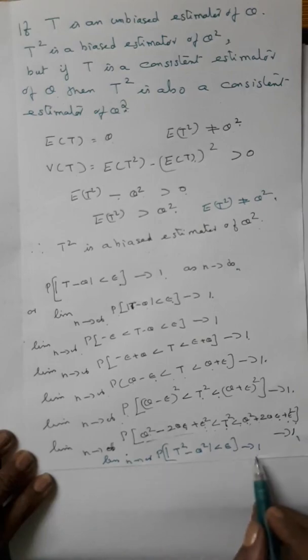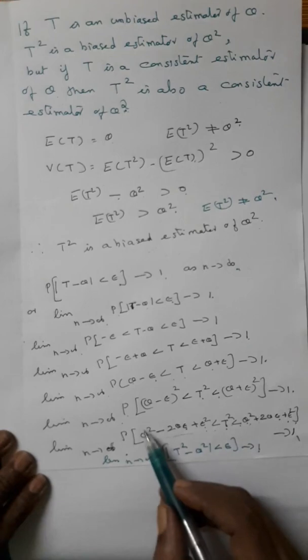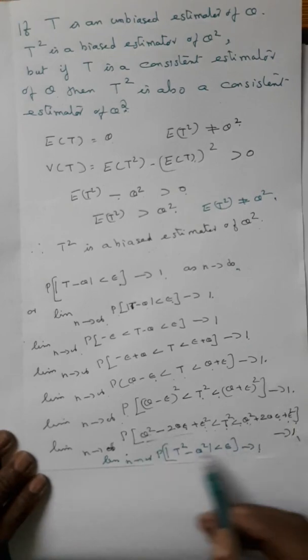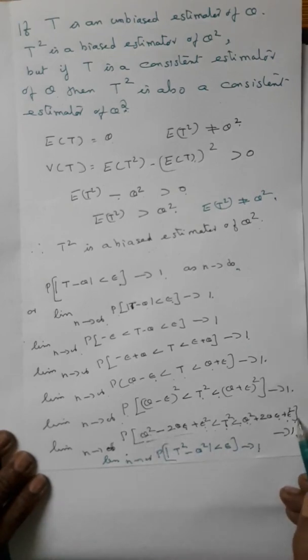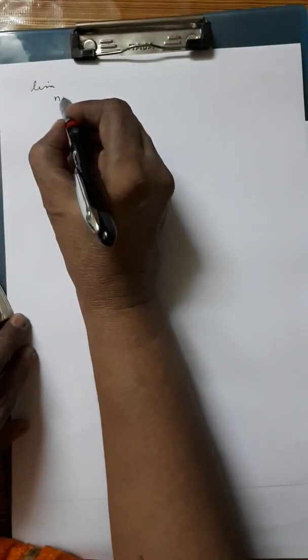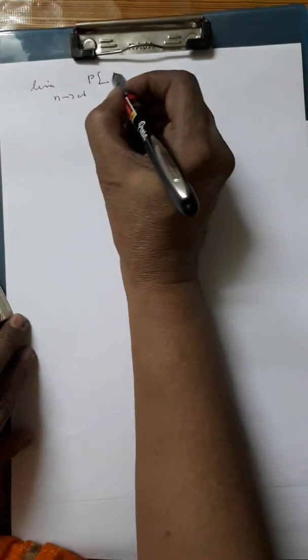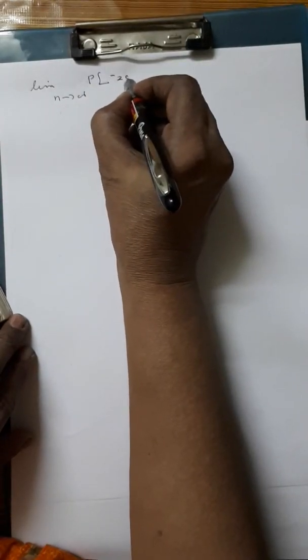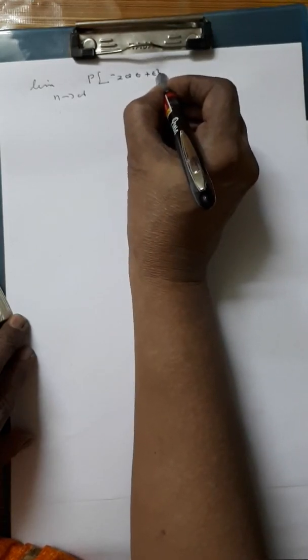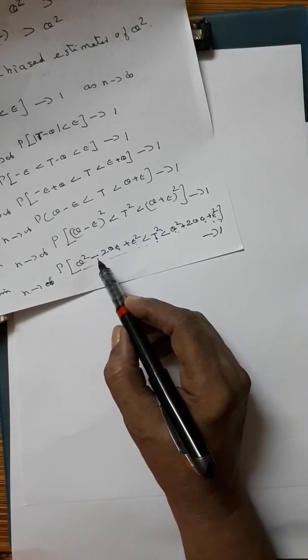For proving this, we are going to subtract theta squared within the bracket. So we get limit n tends to infinity of P of minus 2 theta epsilon plus epsilon squared less than T squared minus theta squared. That is, when we subtract theta squared, we get minus 2 theta epsilon plus epsilon squared.